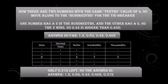Now there are two numbers with the same tenths value of four, so move along to the hundredths for the tiebreaker. One number has two in the hundredths and the other has zero, so the two wins. Therefore 0.42 is bigger than 0.402. The final descending order answer is: 1.2, 0.85, 0.42, and 0.402.